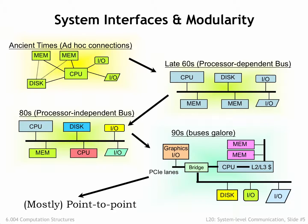As we'll see, engineering considerations have led to the widespread adoption of general-purpose, unidirectional, point-to-point communication channels. There are still several types of channels depending on their required performance and the distance traveled, but asynchronous point-to-point channels have mostly replaced the synchronous multi-signal channels of earlier systems. Most system-level communications involve signaling over wires, so next we'll look into some engineering issues we've had to deal with as communication speeds have increased from kHz to GHz.